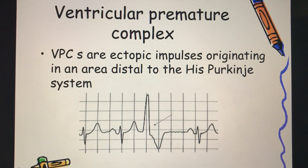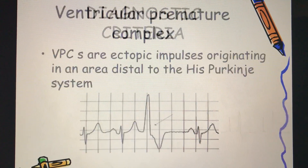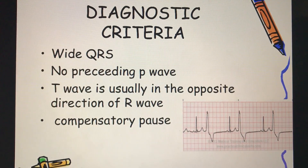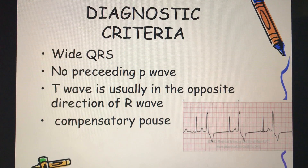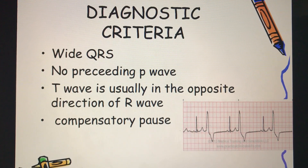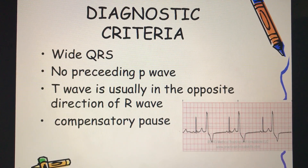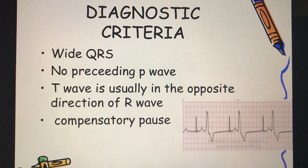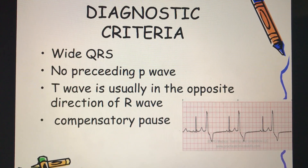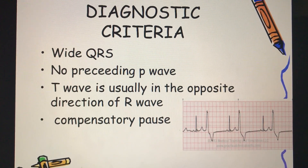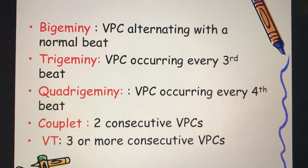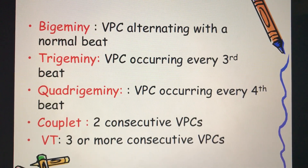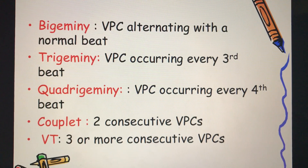Ventricular premature complexes are ectopic impulses originating in an area distal to the His-Purkinje system. The diagnostic criteria for a VPC include a wide QRS, no preceding P wave, a T wave usually in the opposite direction of the R wave, and it is always followed by a compensatory pause.